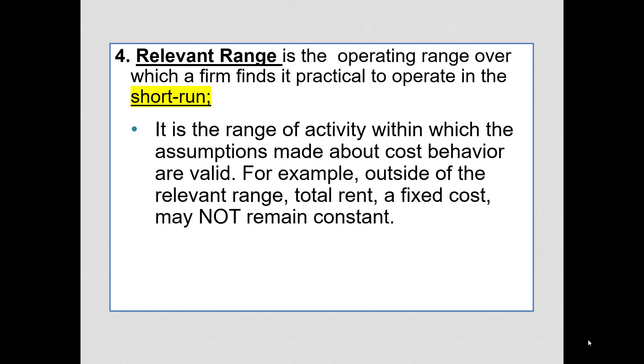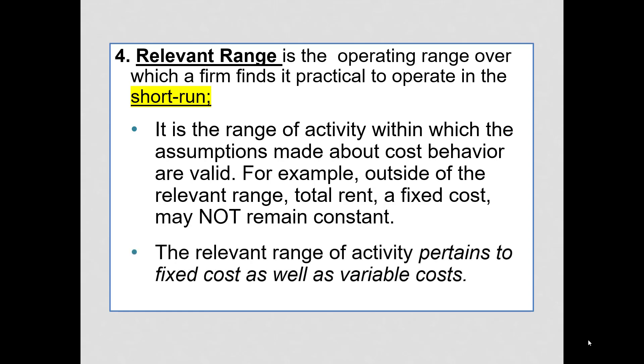For example, rent. If you need more facilities, you will have more rent. Now, this relevant range of activity does pertain to both fixed and variable costs. Variable costs that could change with activity would be if you get a purchase discount if you purchase above a certain level. So, we're going to hold our discussions to a very short range of activity and we can hold our definitions true.